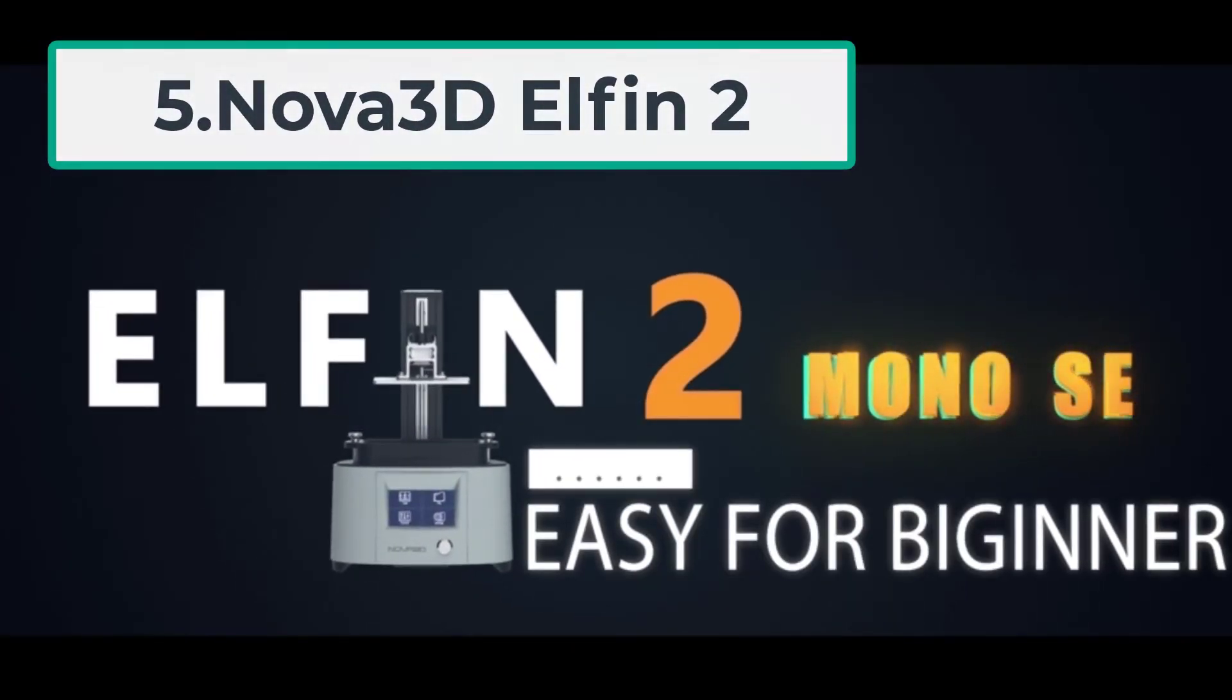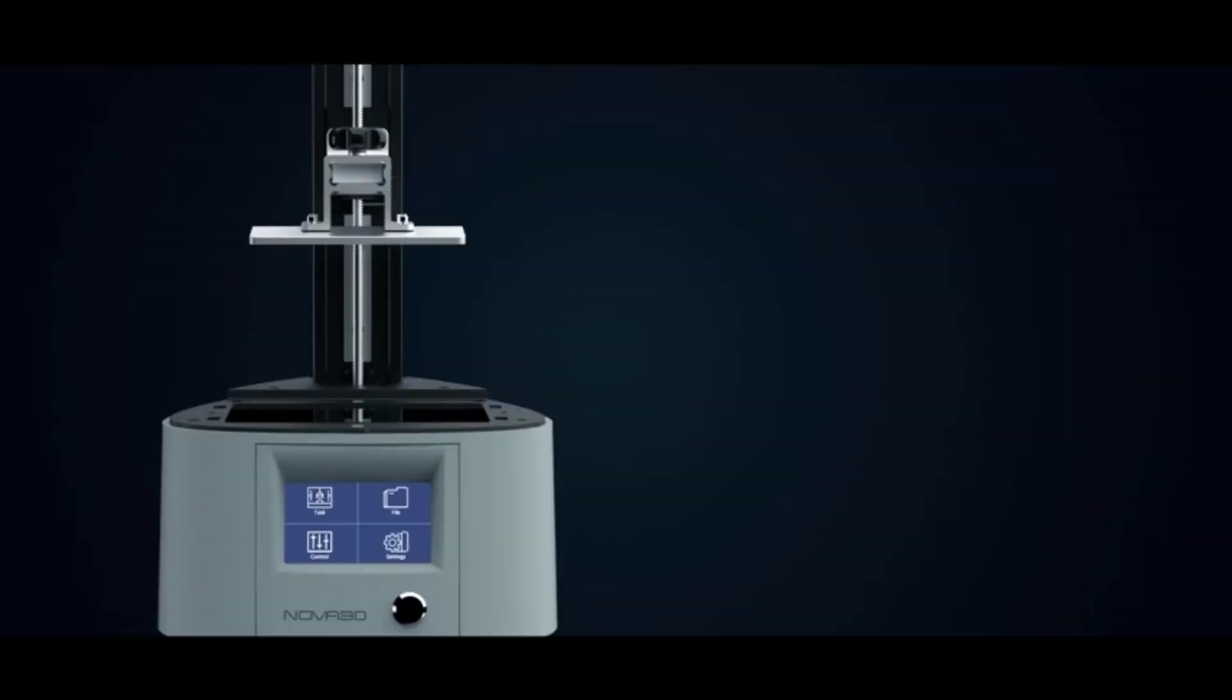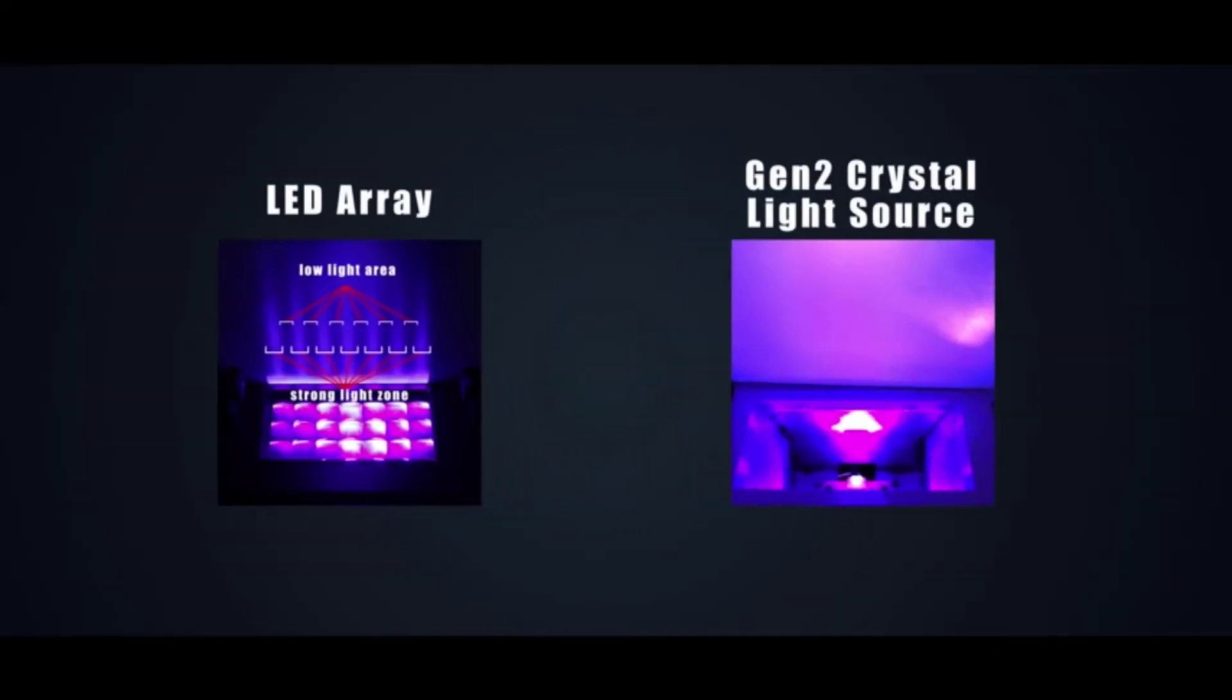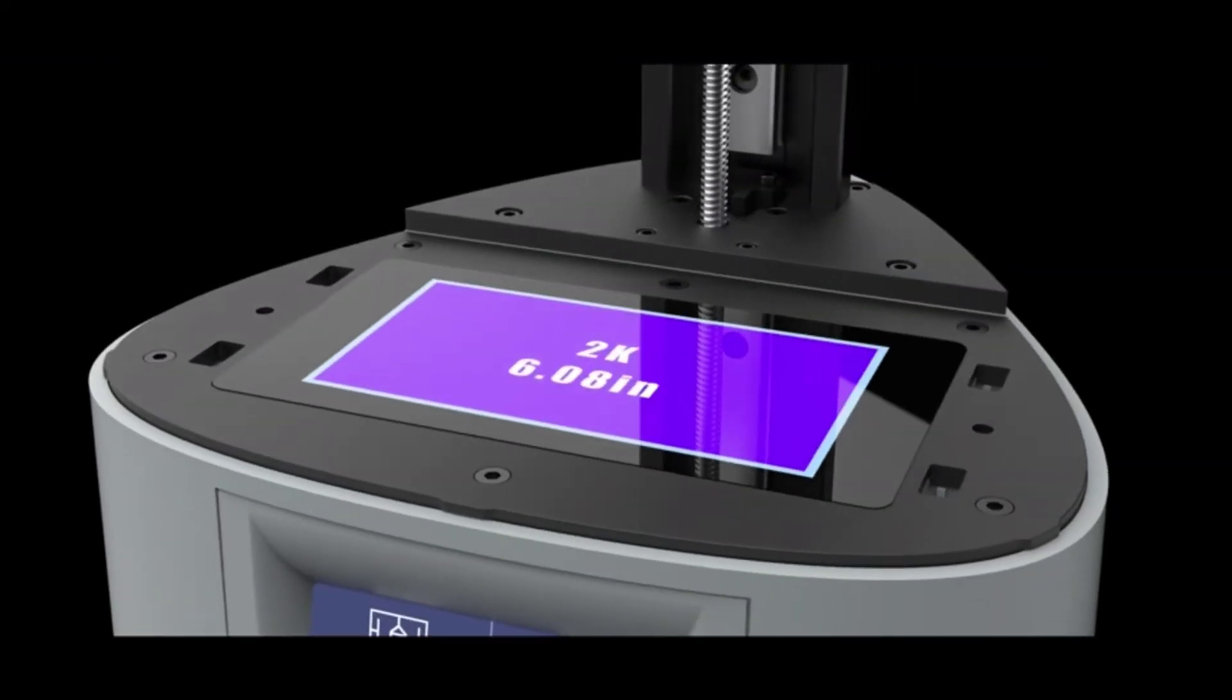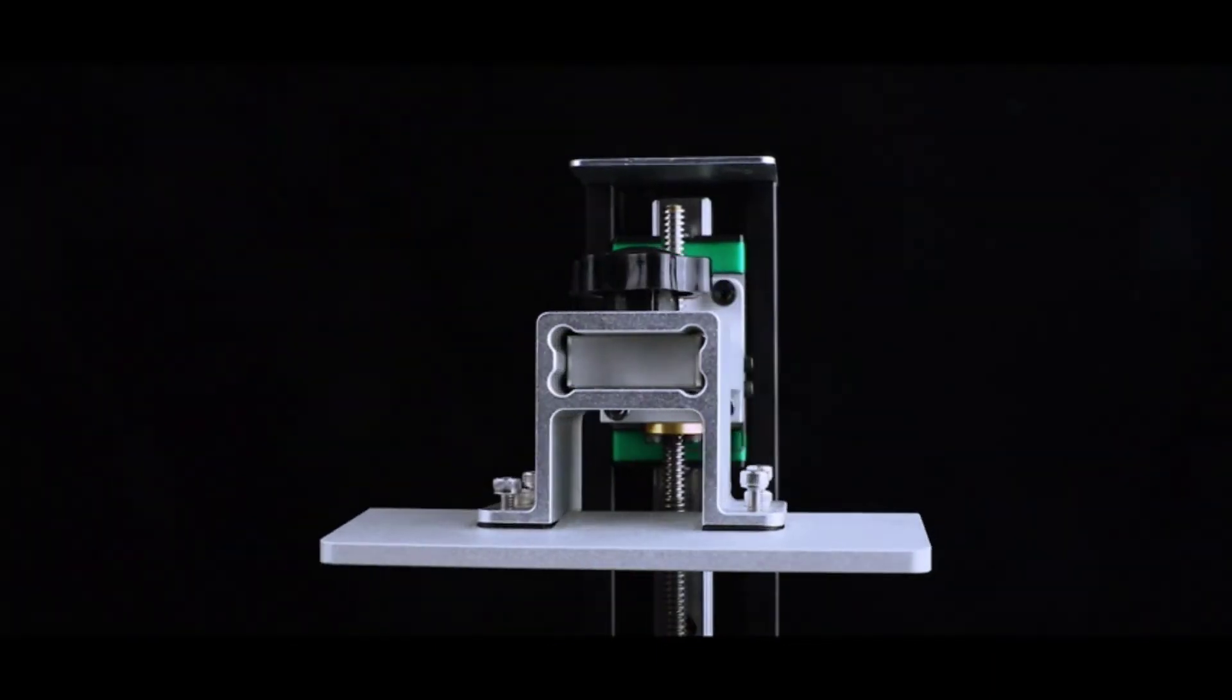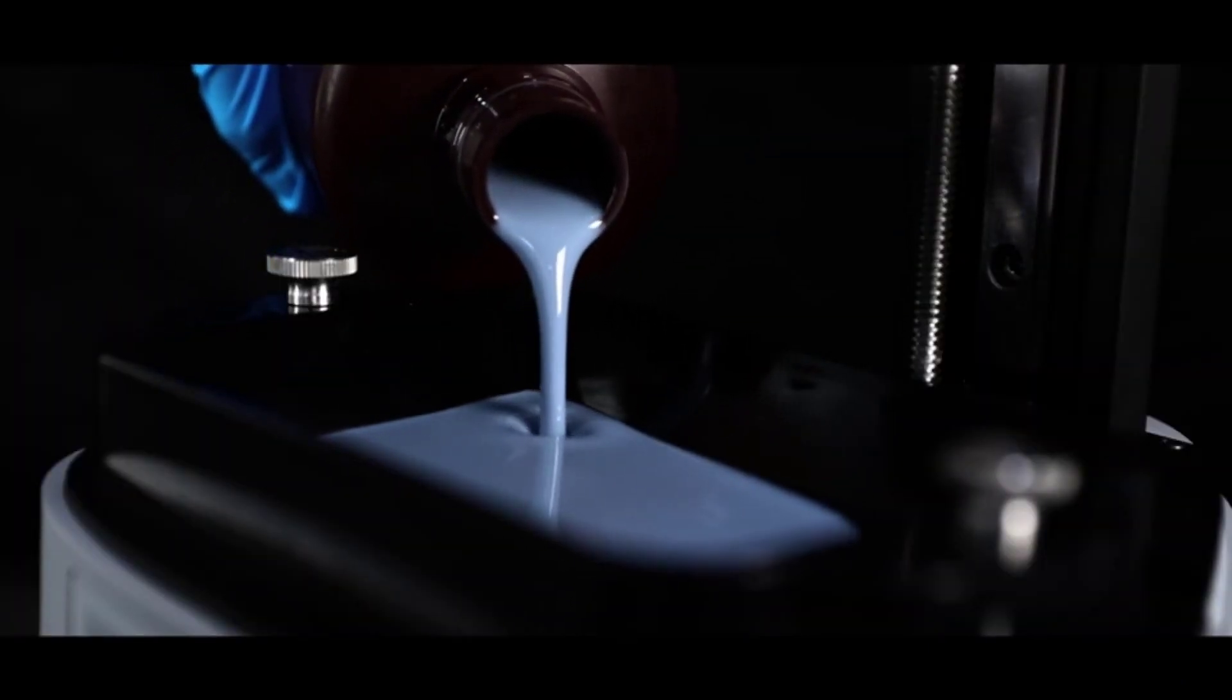At number 5, Nova 3D Elfin 2. The Nova 3D Elfin 2 is a cheap but good stereolithography 3D printer. It sports a 2K 2560x1440 pixel resolution LCD. There's a 132x74x150mm build area. XY-axis positioning accuracy is 0.05mm with Z-axis positioning accuracy of 0.01mm. As such, the Nova 3D Elfin 2 produces fantastic prints.